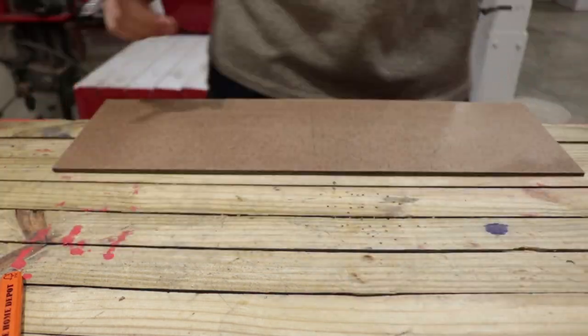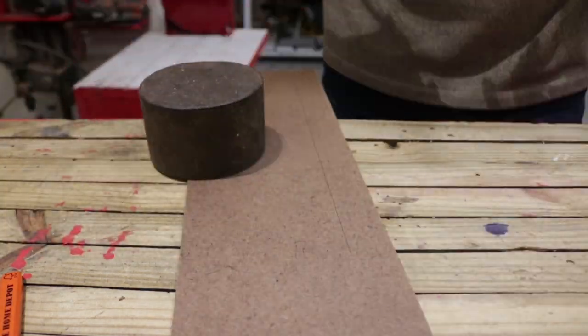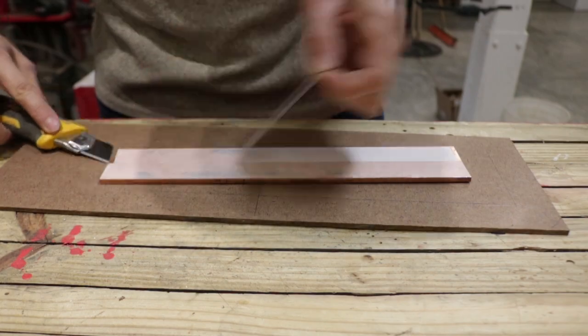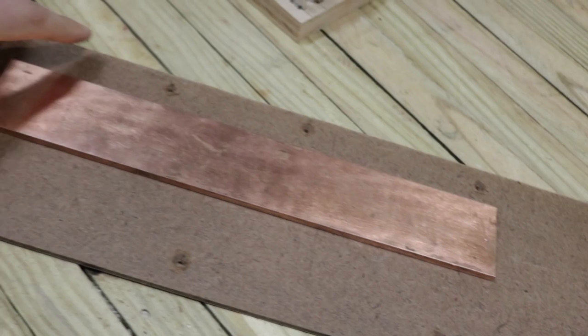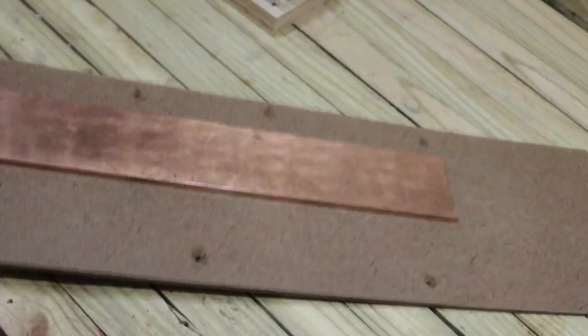Just taking off some burrs on the copper, and because our copper stock is exactly two inches, we need to make sure it's square in our machine. Now we're all set and ready to drop it into the CNC.